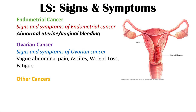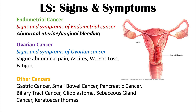Other cancers that can occur in Lynch syndrome include gastric cancer, small bowel cancer, pancreatic cancer, biliary tract cancer, glioblastoma, sebaceous gland cancer, and keratoacanthomas. While colorectal, endometrial, and ovarian cancers are by far the most common, there are also increased risks of these other cancers, so it is important to look out for their signs and symptoms in families with Lynch syndrome.